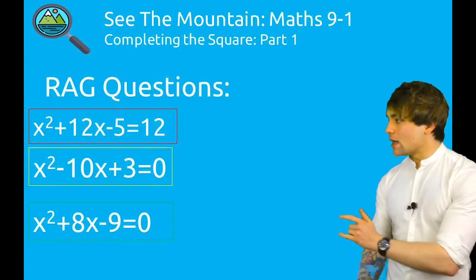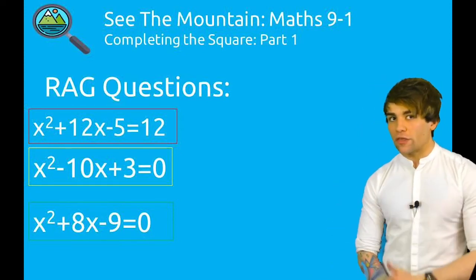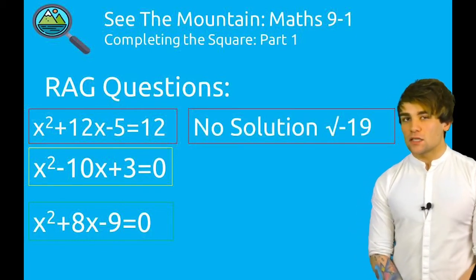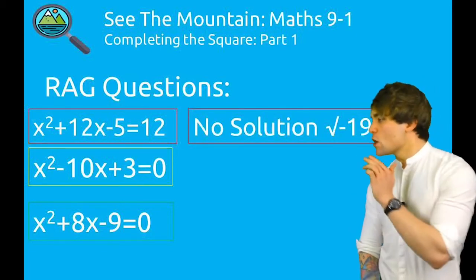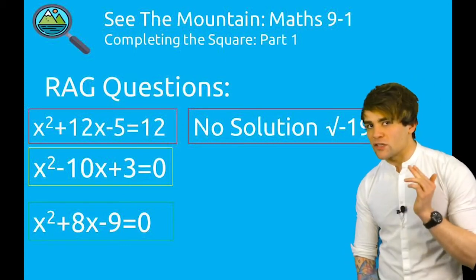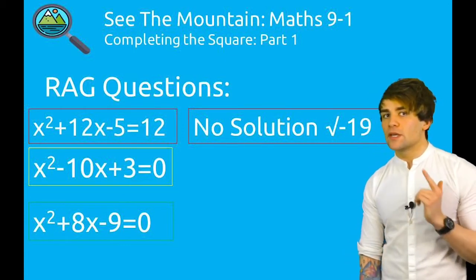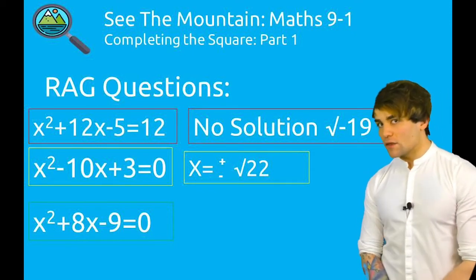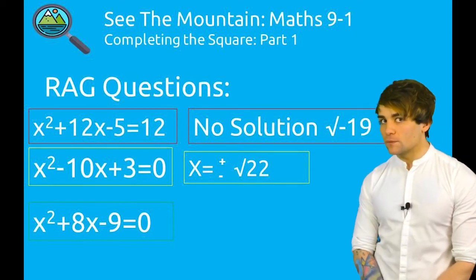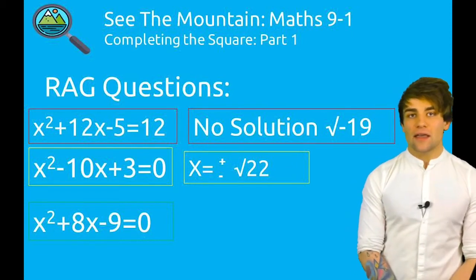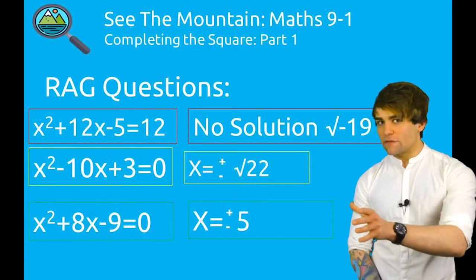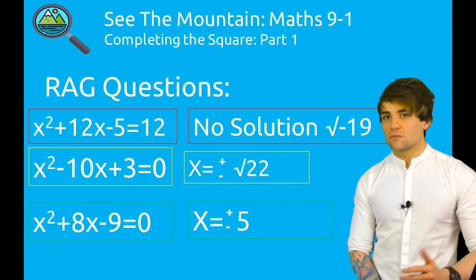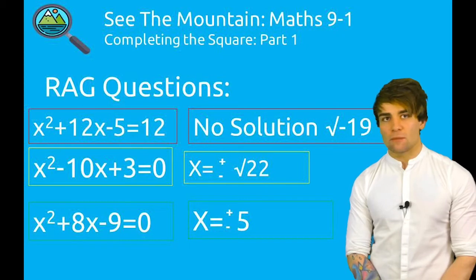Three questions: red, amber, and green. Attempt all three. Pause the video now to do that. Answer's coming up. First answer: you should have found there was no actual solutions. Was back in that scenario of trying to square root a minus number. Second one: we found x is equal to ±√22. And finally, x is equal to ±5. This is because you found yourself in the scenario of x equals the square root of 25. That simplifies to x = ±5.